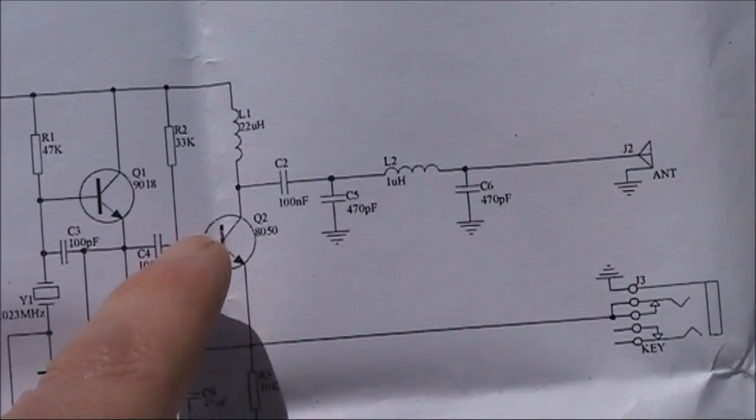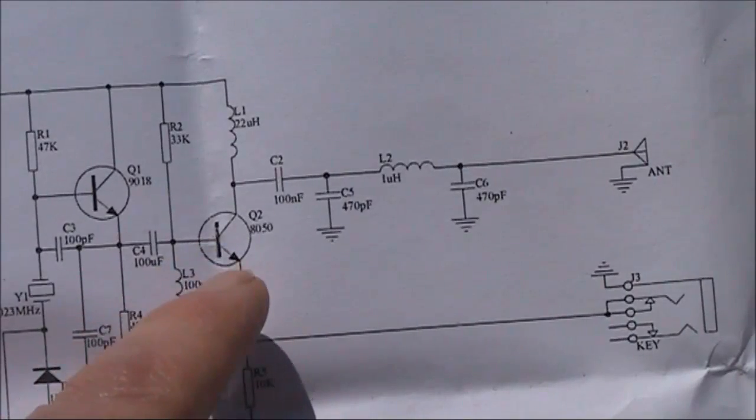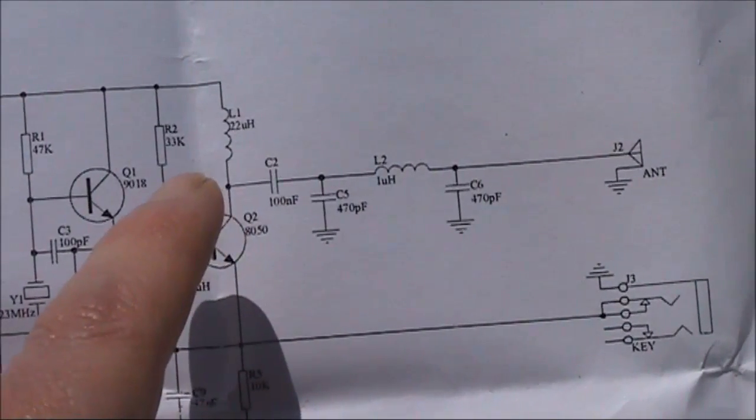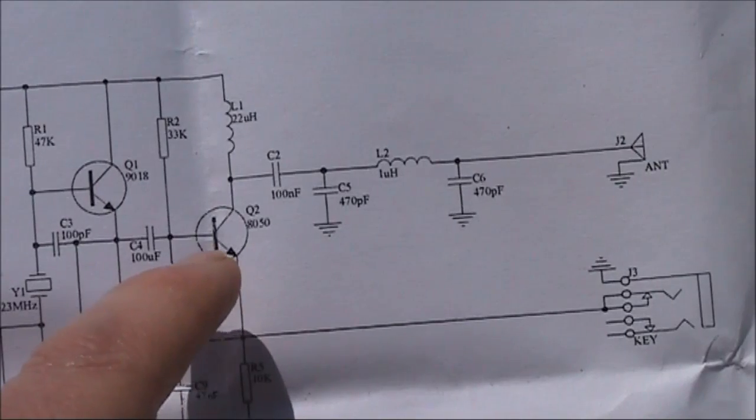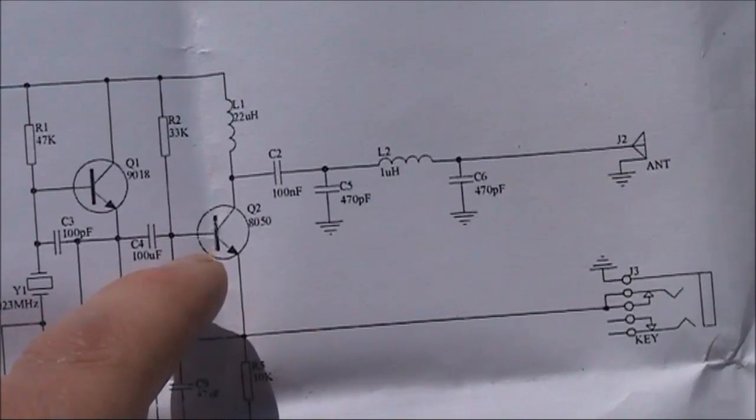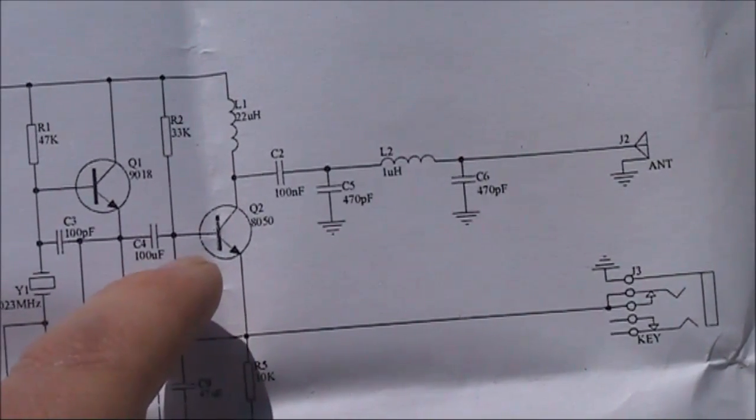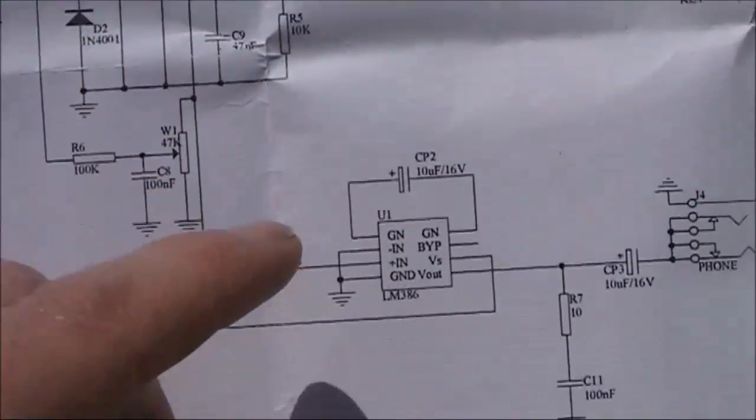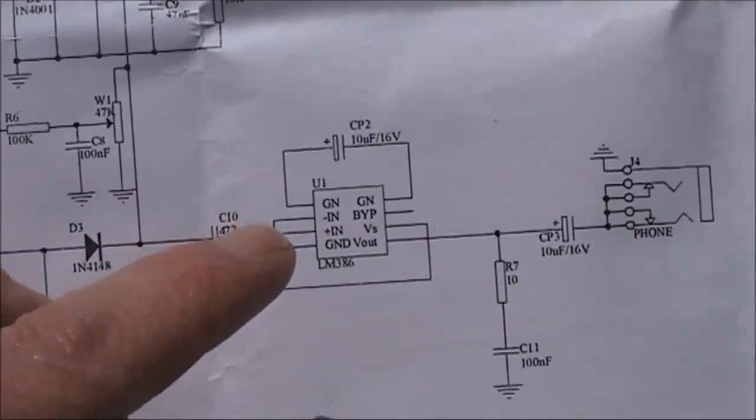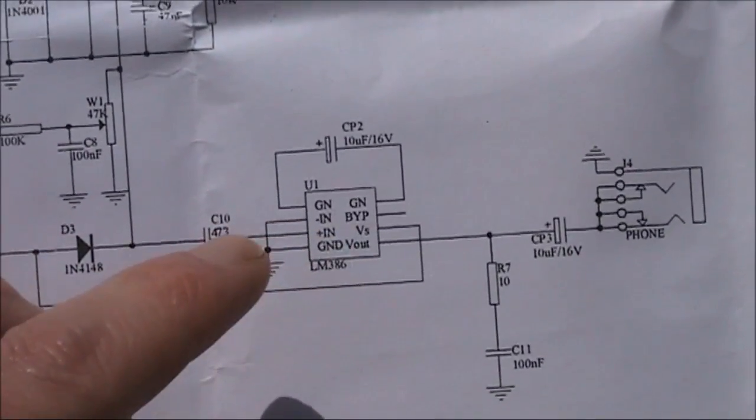On receive, Q2 also operates as a mixer diode. That's why you don't need transmit receive switching. It's simple, it's crude, but it does work, sort of.